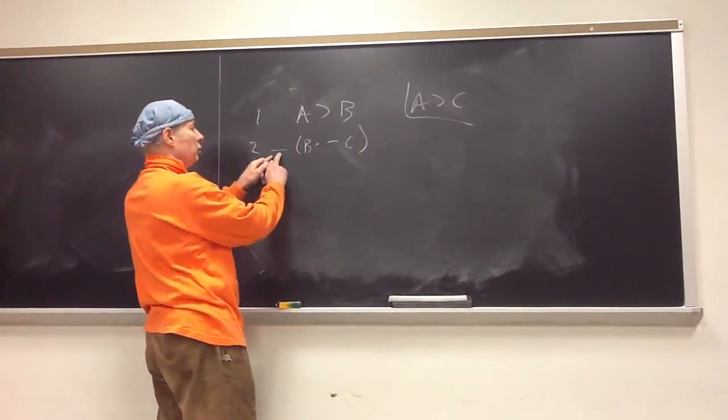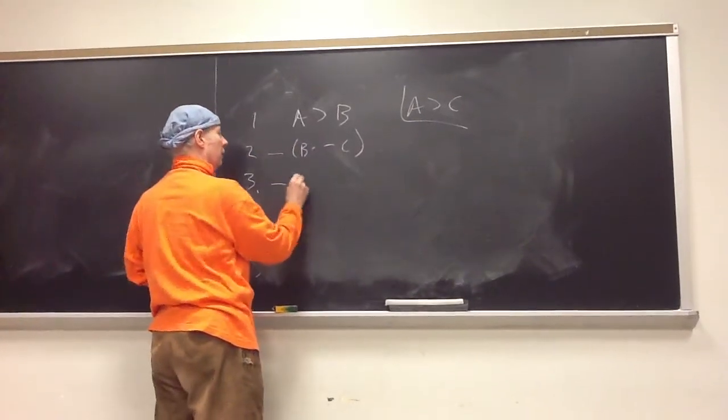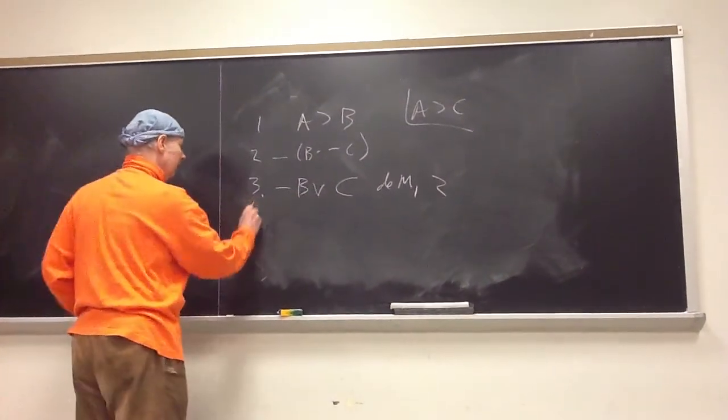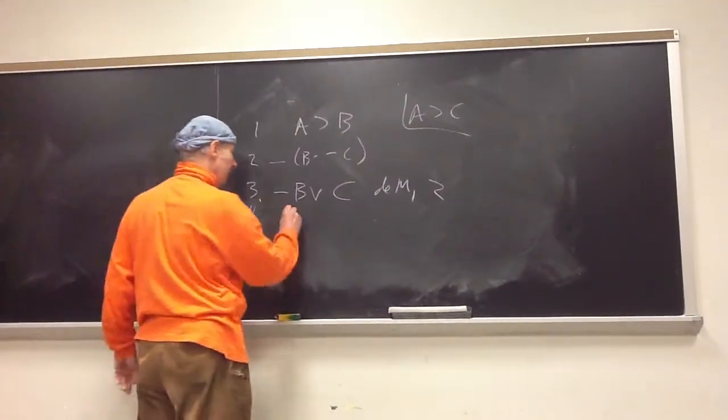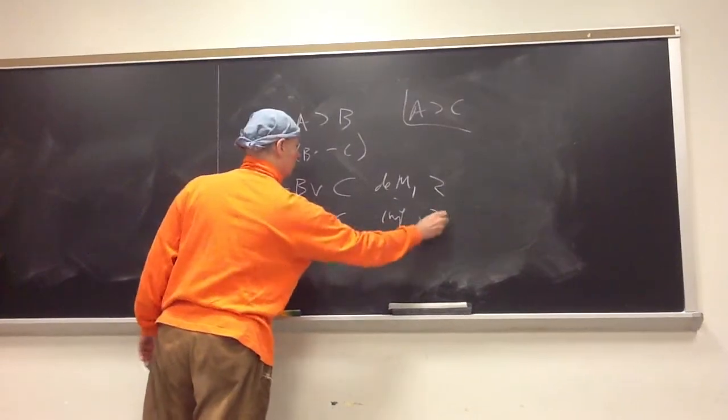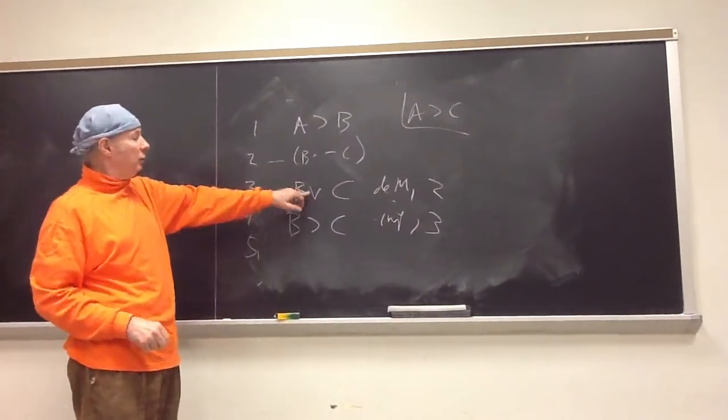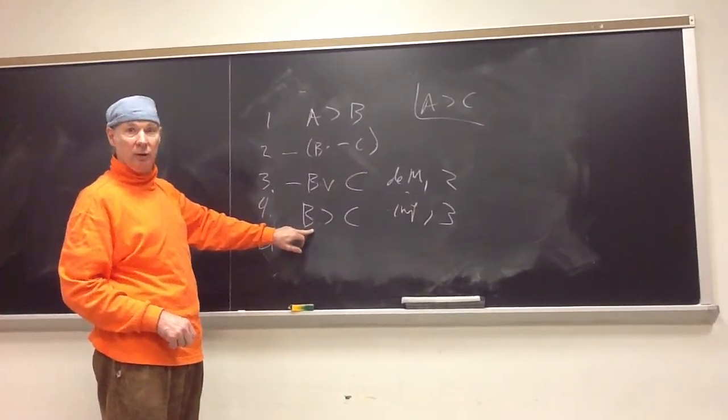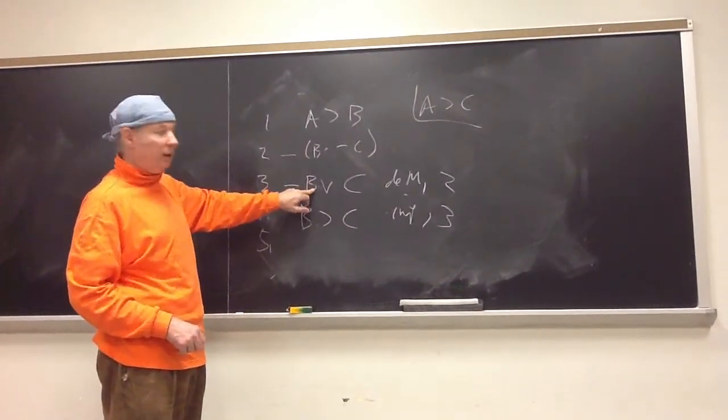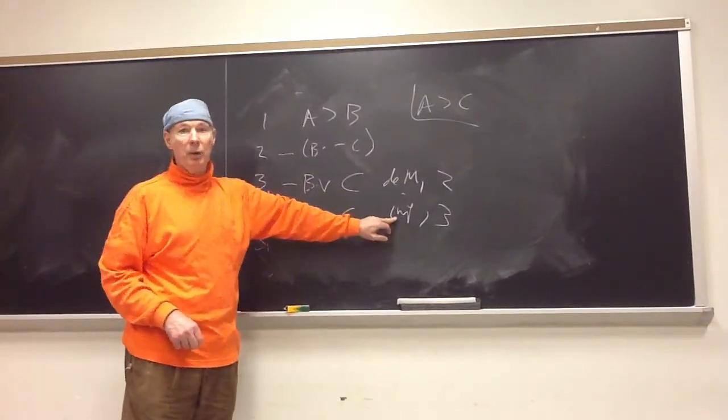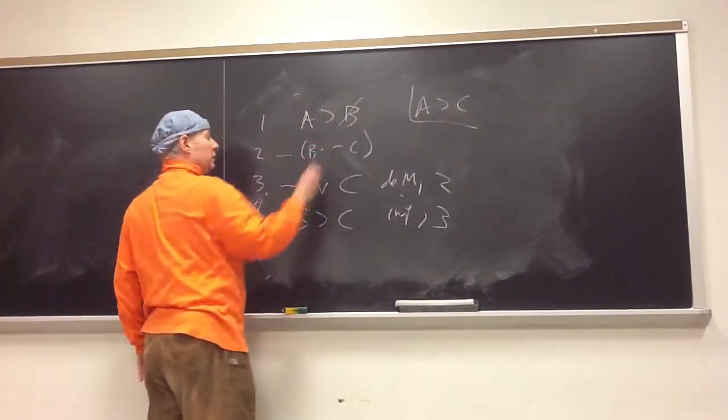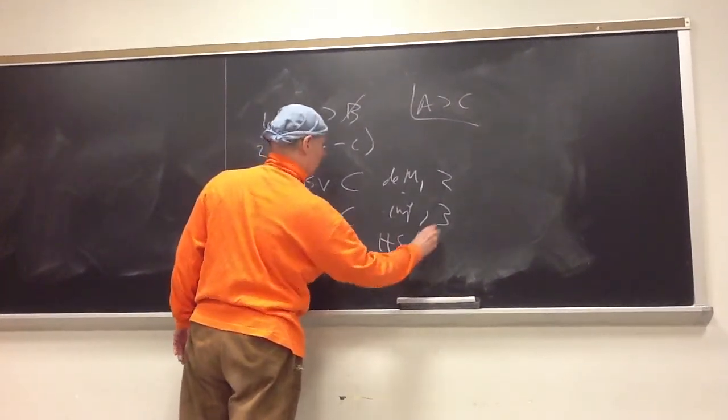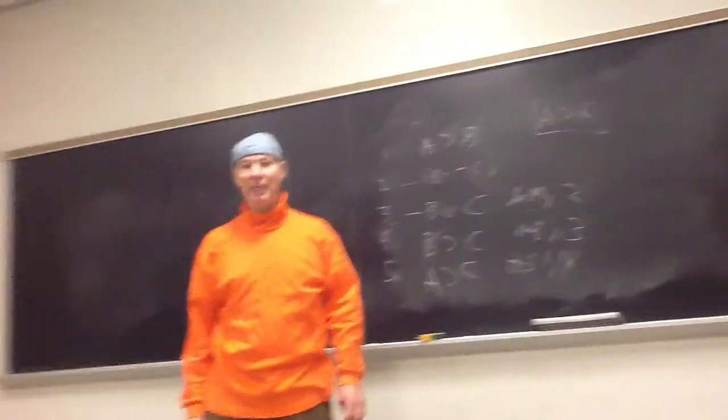When you De Morgan you drive the squiggle in and that's what you get. Check with the rule De Morgan. Now I'm going to change this into a horseshoe by IMP. And notice now I change that to a wedge, that to a horseshoe. Two, three, and four are the same thing. They're all equivalent. They just look different. I change two into three by one of the middle ten rules. I change three into four by one of the middle ten rules. I now have two horseshoes. Right hand side of one and left hand side of the other are the same. So I can do HS to get what I wanted. And that is it.